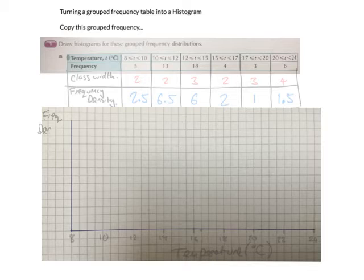And the thing that goes up the side is always frequency density. That's always what frequency density is. So what we are going to do is put the scale going up the side so that we can fit 6.5 on our graph.